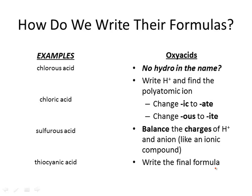Some examples: chlorous acid — no 'hydro' means it's an oxy acid, which means -ous needs to go back to -ite, so we're looking for the chlorite ion. 'Acid' tells me there's H+. Chlorite is ClO2 with a −1 charge. Plus 1 and minus 1 balance out, so I get HClO2.